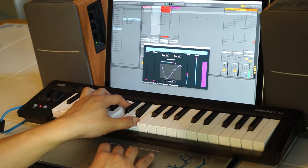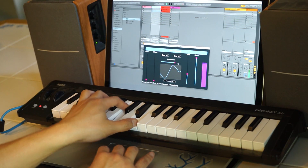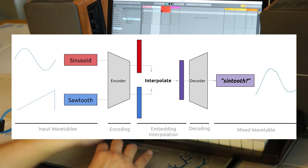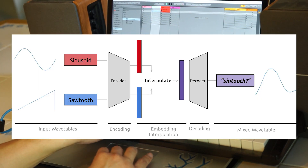Neural Wavetable interpolates sounds not by adding or subtracting, but it interpolates the sounds in the latent space of the neural network. So in this case, it can create a variety of new and unique sounds.